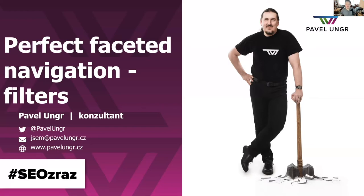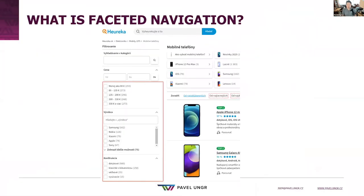Okay, filters or faceted navigation is something I am very interested in for years. I think it is a very important thing, and what is bad is that not so many eShops and not so many web developers fully understand it and can prepare crawlable and indexable faceted navigation. So let's go. What is faceted navigation? It's something like this — probably you saw it on some eShop. I chose a big website, alza.cz, and you can see there is a list of products and you can filter it with some parameters.